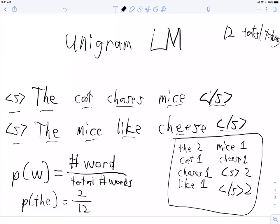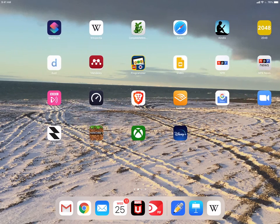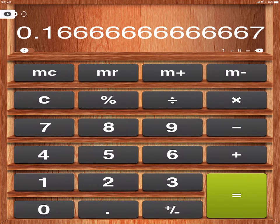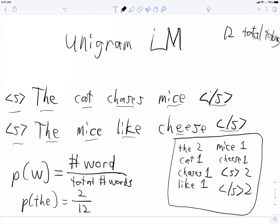So, the probability of the is going to be 2 divided by 12. So, if we break out our calculators, that'll give us a particular number. I can find my calculator here. Never mind. Sorry about that. Anyway, it's 2 divided by 12. The probability of cat is going to be 1 divided by 12. So, that's a very, very basic language model. But, it's not going to be super helpful.